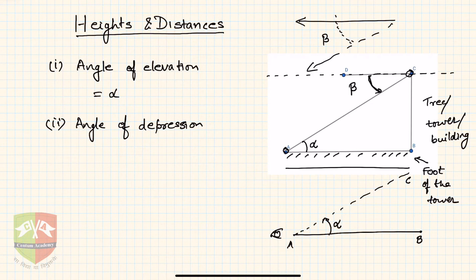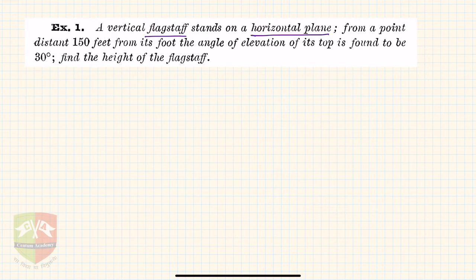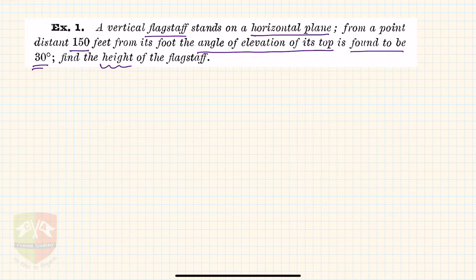With these concepts you will be able to solve a lot of questions. Let us take the first example in heights and distances: a vertical flagstaff stands on a horizontal plane. From a point 150 feet from its foot, the angle of elevation of its top is found to be 30 degrees. Find the height of the flagstaff. For any heights and distances problem, I recommend drawing a proper representative diagram.